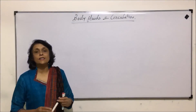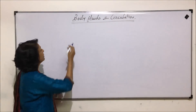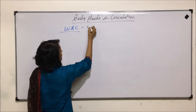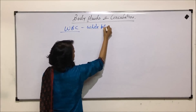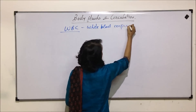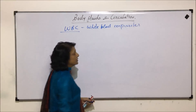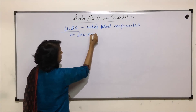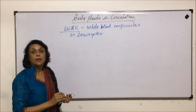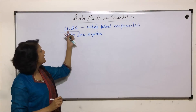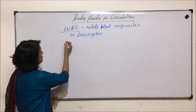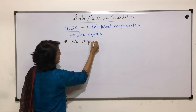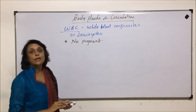Now we will discuss the next type of corpuscle, that is WBC — white blood corpuscles. They are also known as leukocytes. They are without any pigment, and that is why we call them white. There is no respiratory pigment like hemoglobin.